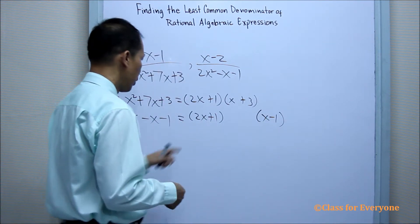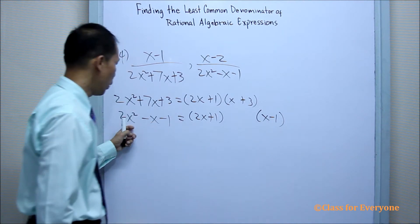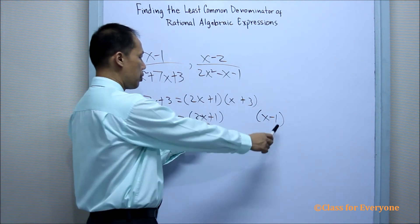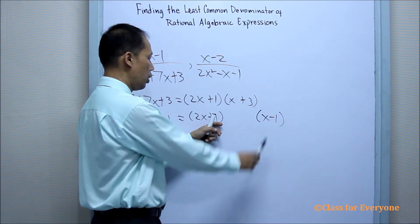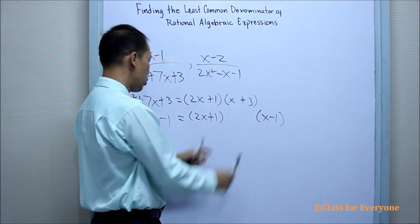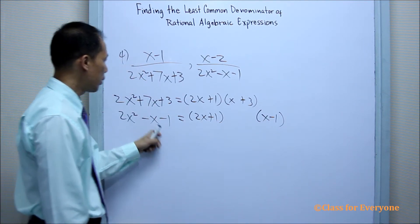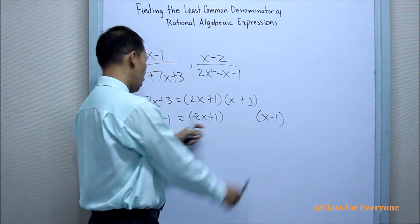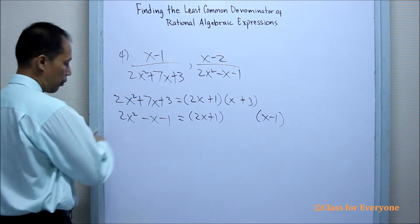Let us check. 2x times x is 2x squared. 2x times negative 1 is negative 2x. 1 times x is x minus 2x is negative x. 1 times negative 1. So the factors are correct.